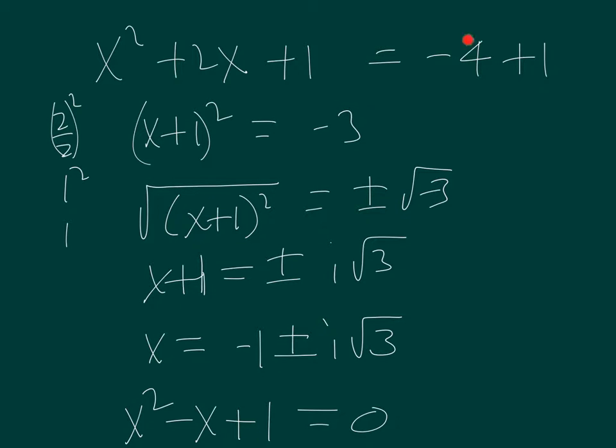So we'll move the negative four over or subtract four from both sides. And then divide two by two and square it which gives us one squared or one. So we will add one to both sides. And then factor the left and we have x plus one squared equal to negative three.